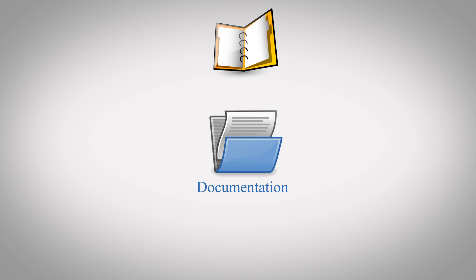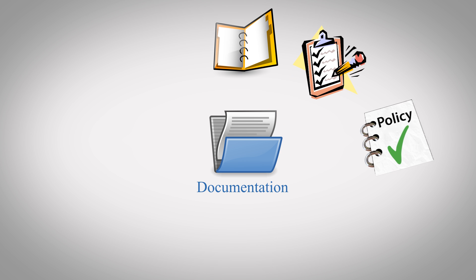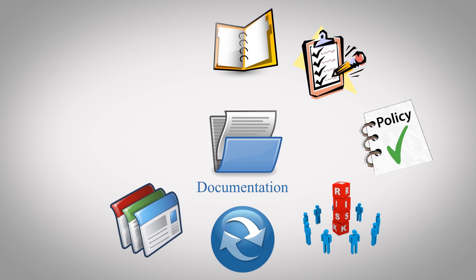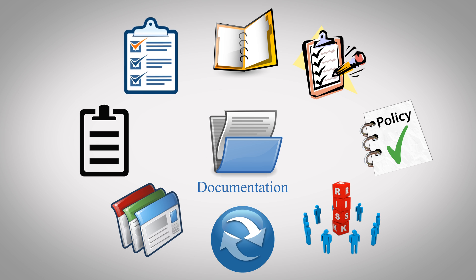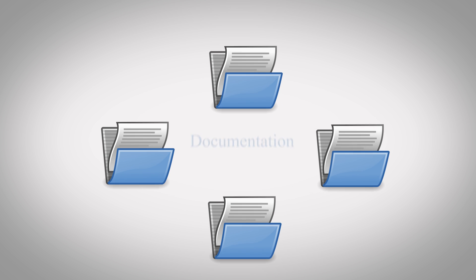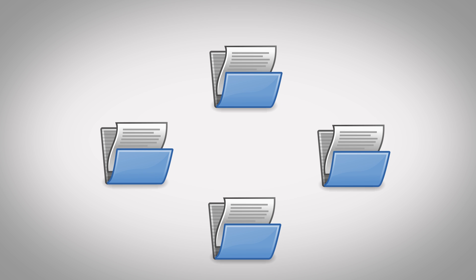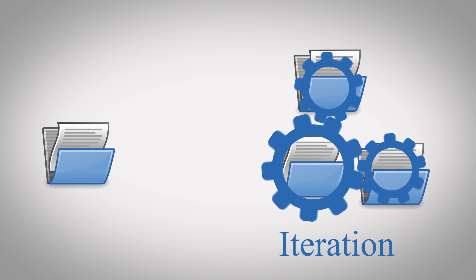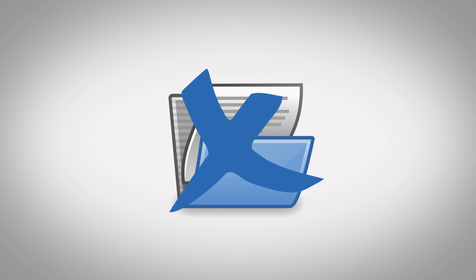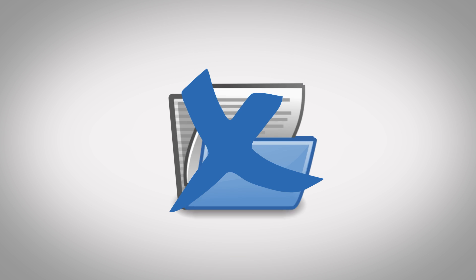The fourth step is documentation, which might include manuals, procedures, policies, risk assessments, work instructions, templates, formats, checklists, and any kind of documentation. This documentation has to be implemented properly. After you start implementation, the documentation will go through a couple of iterations, because at the first go the document might not be perfect — so documents will go through a couple of changes until finalized.